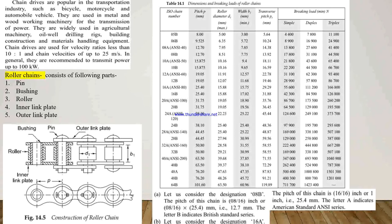Now we see the roller chains. Figure 14.5 shows the construction of roller chains. Roller chains mainly consist of a pin, bushing, roller, inner link plate, and outer link plate. The pin is press-fitted to two outer link plates, while the bush is press-fitted to inner link plates. The bush and pin form a swivel joint, and the outer link is free to swivel with respect to the inner link. The rollers are freely fitted on bushes and during engagement turn with the teeth of the sprocket wheels.